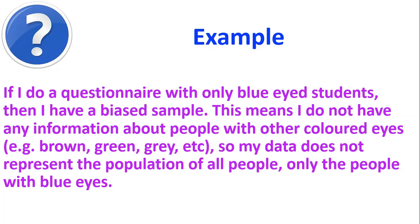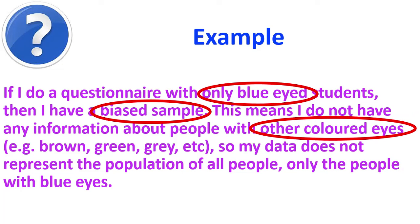Here's an example. If I've got a questionnaire and I only ask the blue-eyed students, then that means I've got a biased sample. What that means is I've got lots of information about the people who have blue eyes, but I don't have any information about people with different colored eyes. So my data doesn't represent the whole population of all people. It only represents the population who have blue eyes.